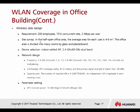From the site survey, in the half-open office area the average area per user is 4 to 6 square meters, and the office area is divided into many rooms. Device selection: use the indoor sector AP with dual band. For network design at 2.4 GHz, consider using non-overlapping channels 1, 6, and 11, and also configure 5 GHz.